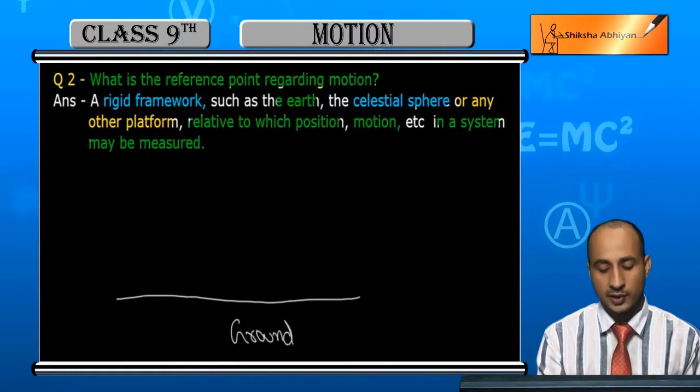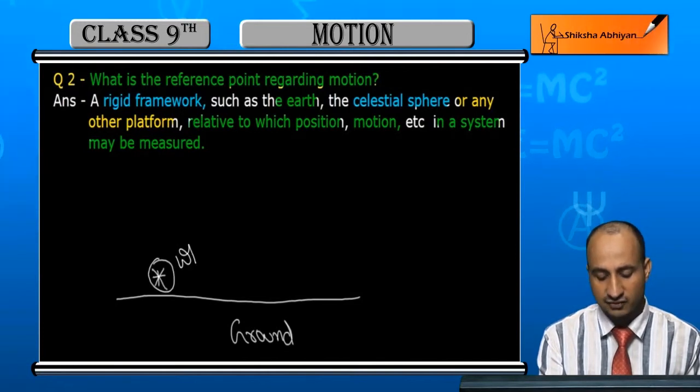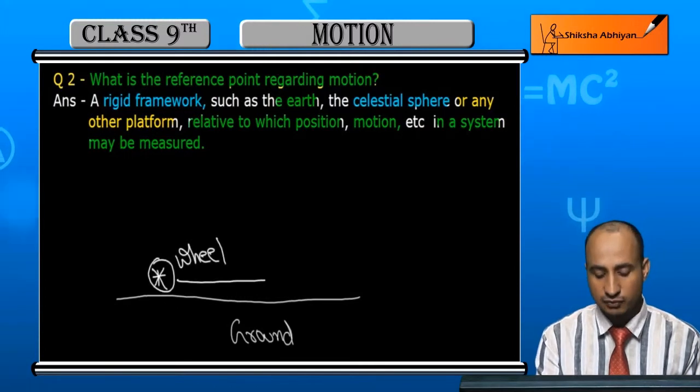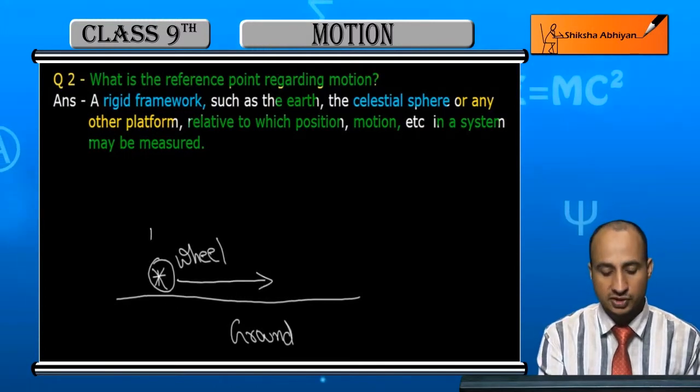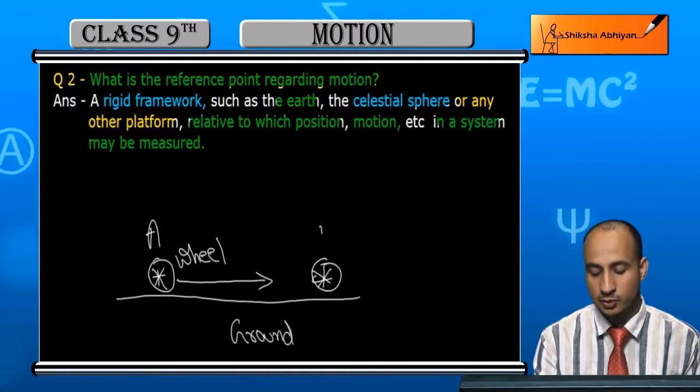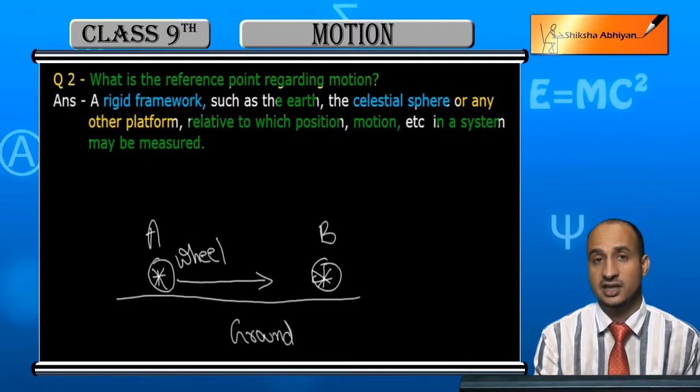And it is ground. Say there is a wheel, there is a wheel of any vehicle. When the wheel moves, its position is first at point A and then its position will be at point B. See there is a wheel, the wheel's position is B.